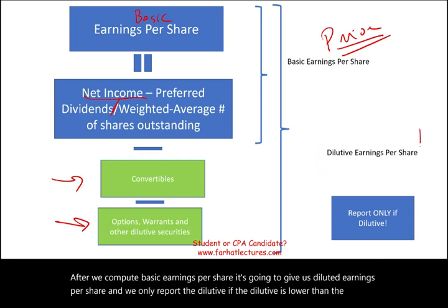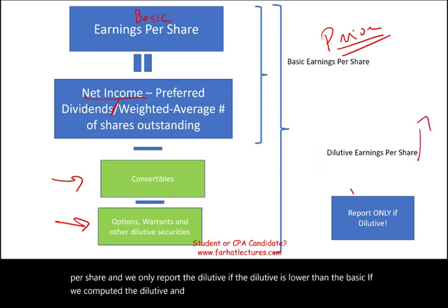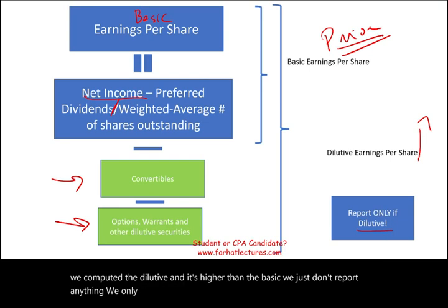If we computed the diluted and it's higher than the basic, we just don't report anything. We only report if it's dilutive. If it's not dilutive, we call it anti-dilutive.